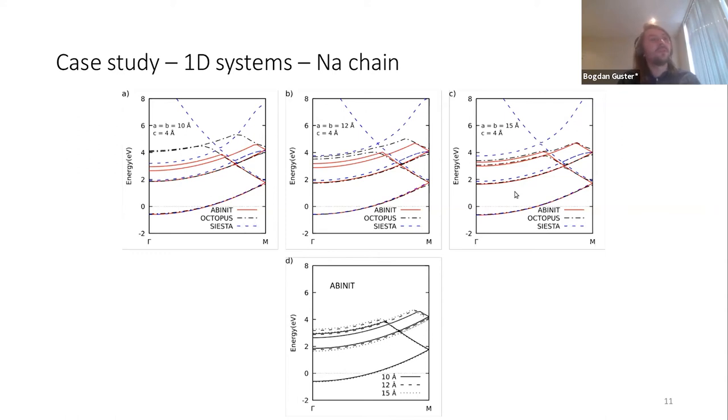In the case of SIESTA, a numerical atomic orbital based code, I've only used DZP, simple double zeta with polarization band structure. That's why we still see some difference in this case. But there's a good thing that ABINIT seems to converge quite fast with respect to the vacuum size.